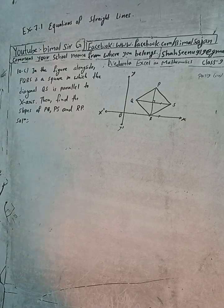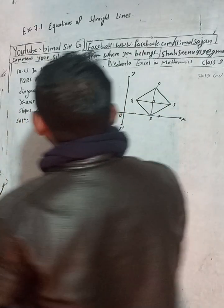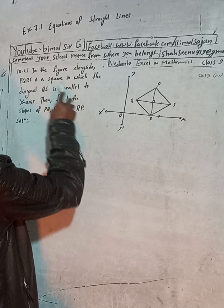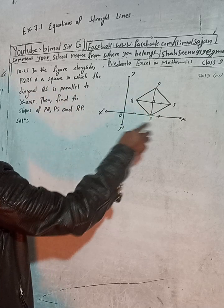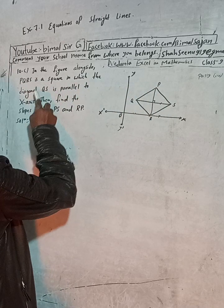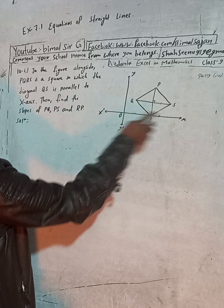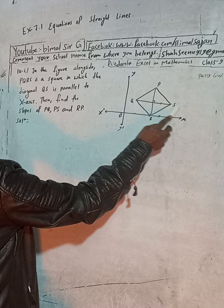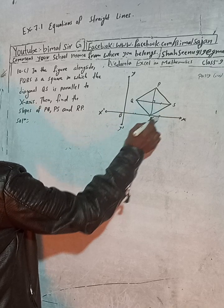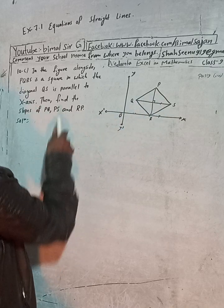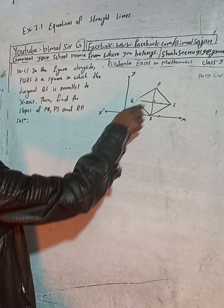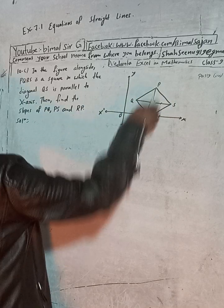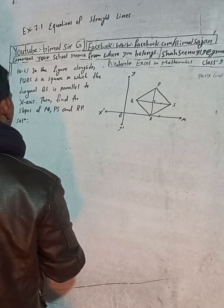In this figure alongside, PQRS is a square in which the diagonal QS is parallel to the x-axis. We need to find the slope of PQ, slope of PS, and slope of RP.